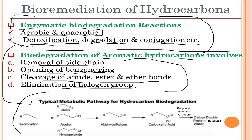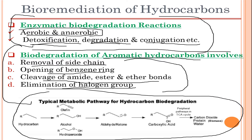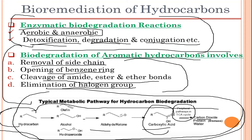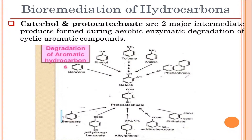A typical metabolic pathway for hydrocarbon degradation proceeds as follows: the hydrocarbon is converted to an alcohol, then to an aldehyde, then to a carboxylic acid. From carboxylic acid it is further degraded to carbon dioxide, protein, and water as it enters the TCA cycle or citric acid cycle. Catechol and protocatechuate are the two major intermediate products formed during aerobic enzymatic degradation of cyclic aromatic compounds.